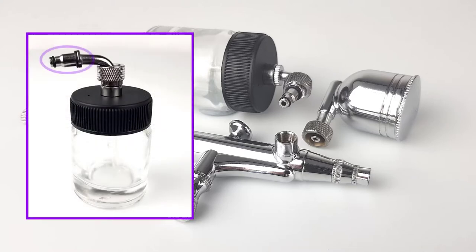The side feed paint jar uses this part to push fit into the airbrush. It then uses this part, which is the locking nut, to tighten against the thread on the airbrush.